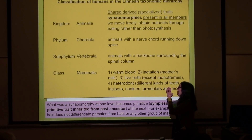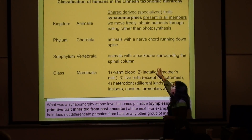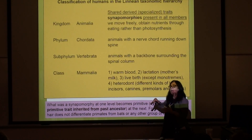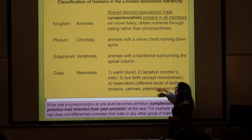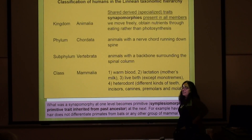Animals with a backbone surrounding their spinal column are in the subphylum Vertebrata — that is a derived characteristic of Vertebrata. For the class Mammalia, we have things related to body temperature: warm blood and constant body temperature. Lactation absolutely defines mammals — it's a wonderful derived trait. Live birth too. We have one exception: the platypus and the echidna, the monotremes, still lay eggs. We do have mammals that have breast milk but lay eggs.